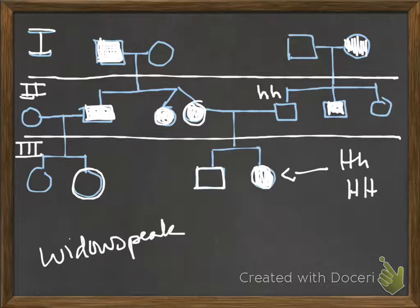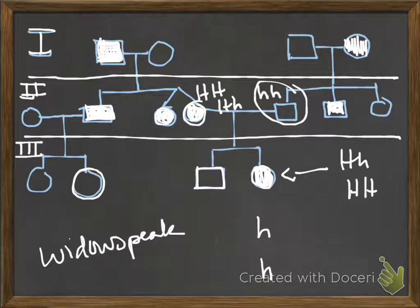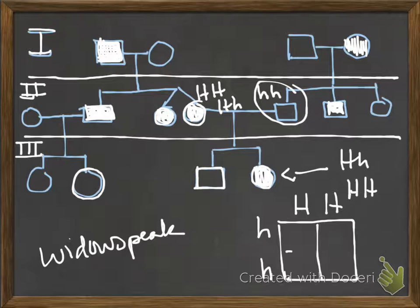If we know her mother could have been big H, big H, or big H, little h, but we know that her father was little h, little h, it also tells us we get a lot of information here.